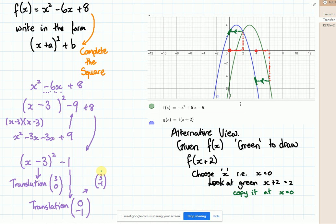Okay, this is a quick planary. It's an alternative view on how you can translate a green graph, the f(x), into a function which is f(x+2). So we're trying to draw the blue f(x) graph.